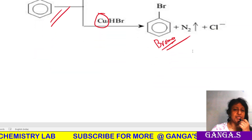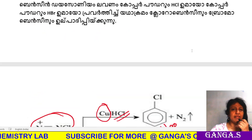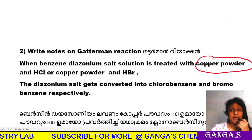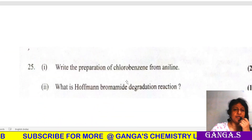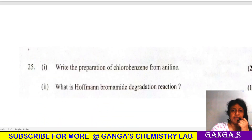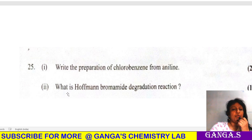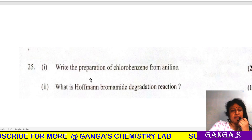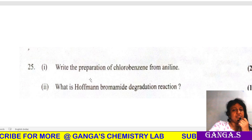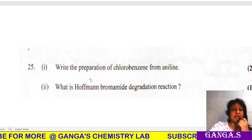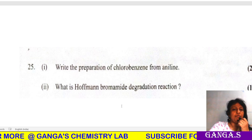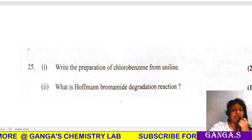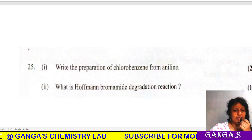Now we have covered two reactions. This is a 3-mark question: write the preparation of chlorobenzene from aniline using two reactions. Next, we have Hofmann Bromamide degradation reaction.